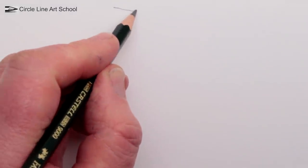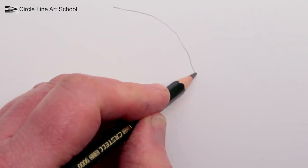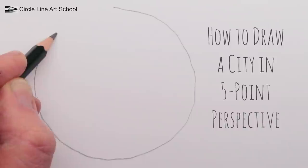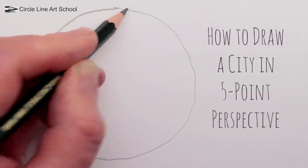Hi Tom here. In this week's Circle Line Art School drawing, I'll show you one way to draw a city using five-point perspective. Start by drawing a circle. You could draw around something or just draw a circle freehand.